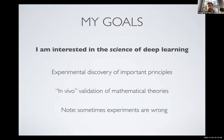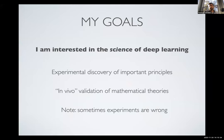One of the things I'm interested in my lab is the science of deep learning — formulating a hypothesis and then doing an experiment to see whether that hypothesis is true. I have the idea that experimental discovery is going to be an important way to unveil important principles that underlie machine learning. It's a good way to discover what we should be proving, and it's important for validation of mathematical theory — to determine whether the principles a theory relies on really say anything about the underlying phenomenon you're trying to study.